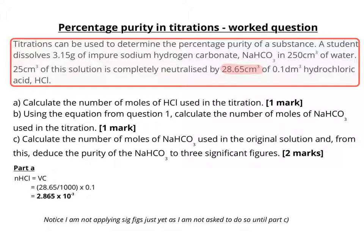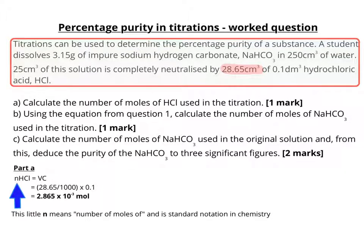Notice I'm not applying significant figures just yet, as I'm not being asked to do so until part C. You might also notice that the little n placed in front of HCl means the number of moles of that substance. So if you put a little n in front of something, that means the number of moles of that thing — so the number of moles of HCl is written as n(HCl).